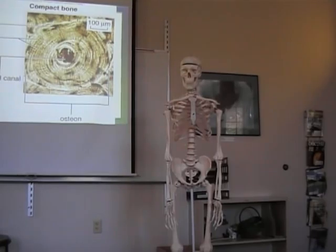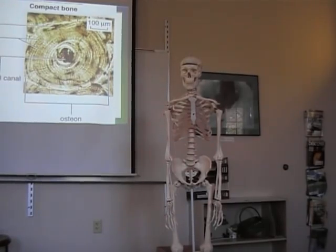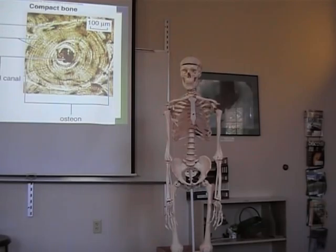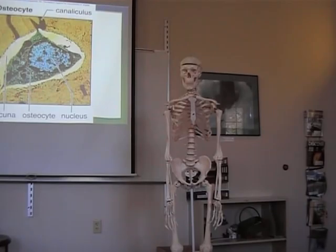If you look at the bone under a microscope, there are cells arranged in circles, which looks like if you cut down a tree. Every black dot is a little area where there was a cell living. That black dot has a name — it's called a lacuna. Lacuna means coffin in Latin, and it looked to the first experimenters like they were a bunch of little coffins. We call the whole bone arrangement an osteon. The cell inside a lacuna is called an osteocyte. Osteo means bone, cyte means cell — so there's a bone cell.